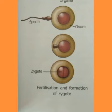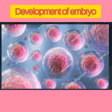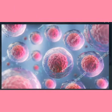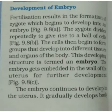After fertilization, the zygote moves down the oviduct and divides repeatedly to form a ball of cells. The cells then begin to form groups that develop into different tissues and organs of the body. This developing structure is termed an embryo.